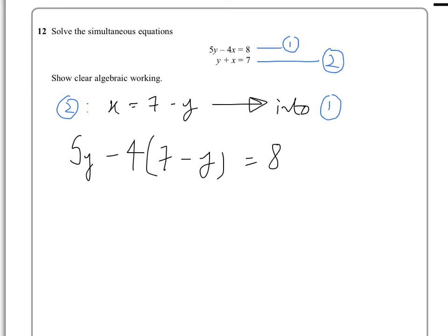so then we get 5y minus 28 plus 4y because we've got a minus 4 times minus y, so it's plus 4y and that equals 8.